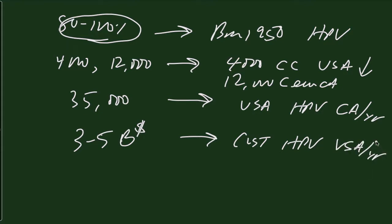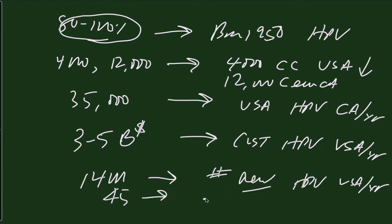A few more numbers. 14 million, the number of new HPV infections in the United States each year. 45, the number of countries who state they have vaccinations available against HPV. One country that actually has an effective vaccination program, which is Rwanda.